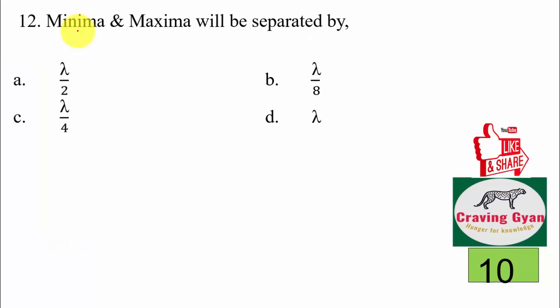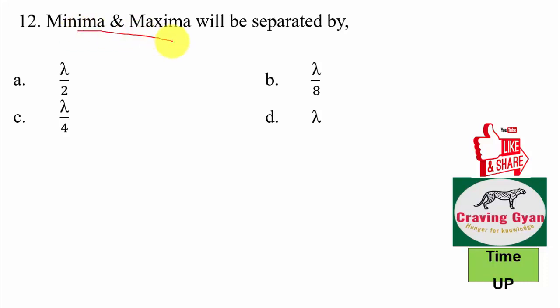Question number 12: minima and maxima will be separated by — first option lambda by 2, second option lambda by 8, third option lambda by 4, fourth option lambda. We know that minima and maxima will be separated by a distance of lambda by 4, hence the suitable option is option number C.